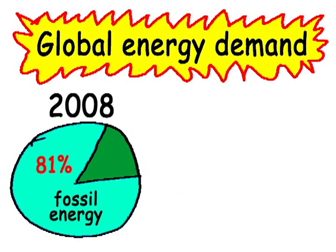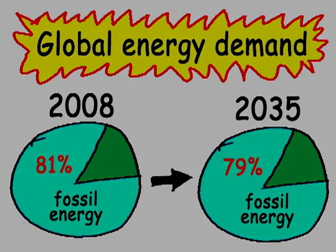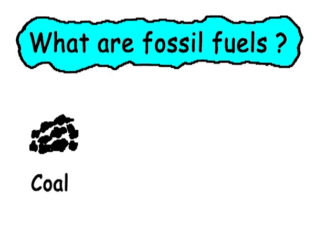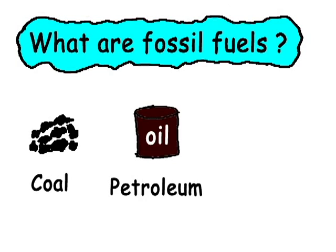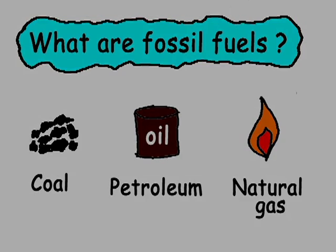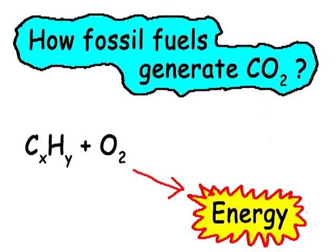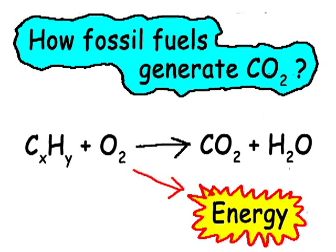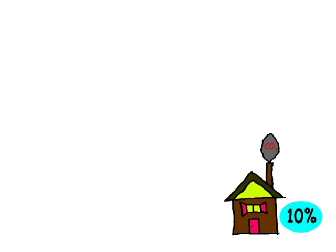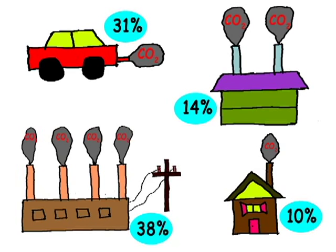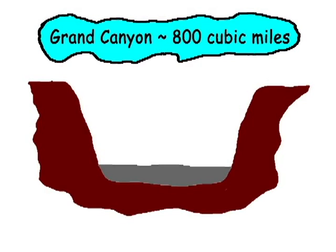We will be using fossil fuels for the next few decades. Coal, petroleum, and natural gas are fossil fuels. We are generating energy by burning fossil fuels, but in addition to energy, it releases carbon dioxide into the environment. These are major sources of carbon dioxide emission. The annually generated carbon dioxide in the U.S.